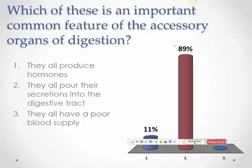The important common feature of the accessory organs of digestion is that they all pour their secretions into the digestive tract. These are exocrine glands, so they don't produce hormones. That's why they're called accessory organs — they're not in the tract itself.